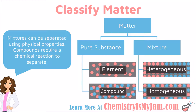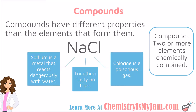Let's next talk about a compound, which is a different type of pure substance. Compounds are two or more elements chemically combined, meaning that a chemical reaction has taken place and these atoms are held together by a chemical bond. One thing to note is that compounds have different properties than the elements that form them.